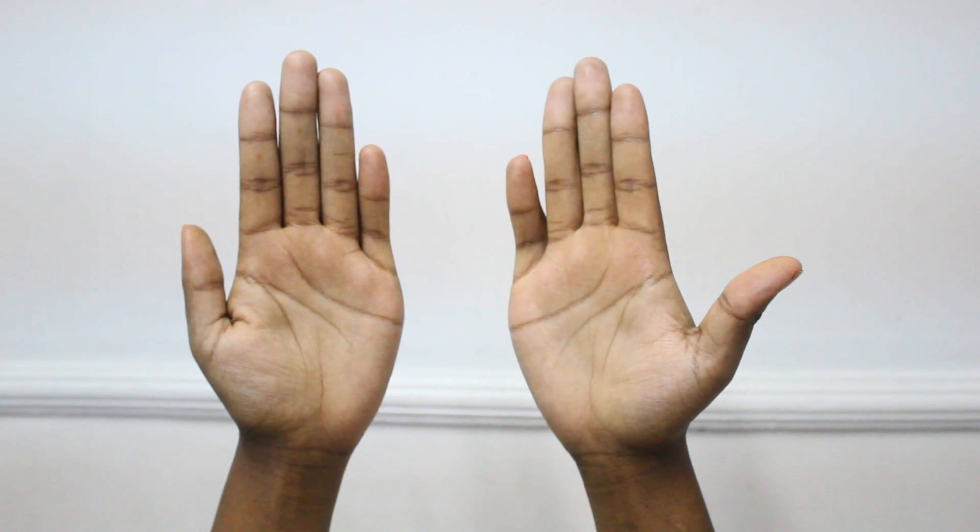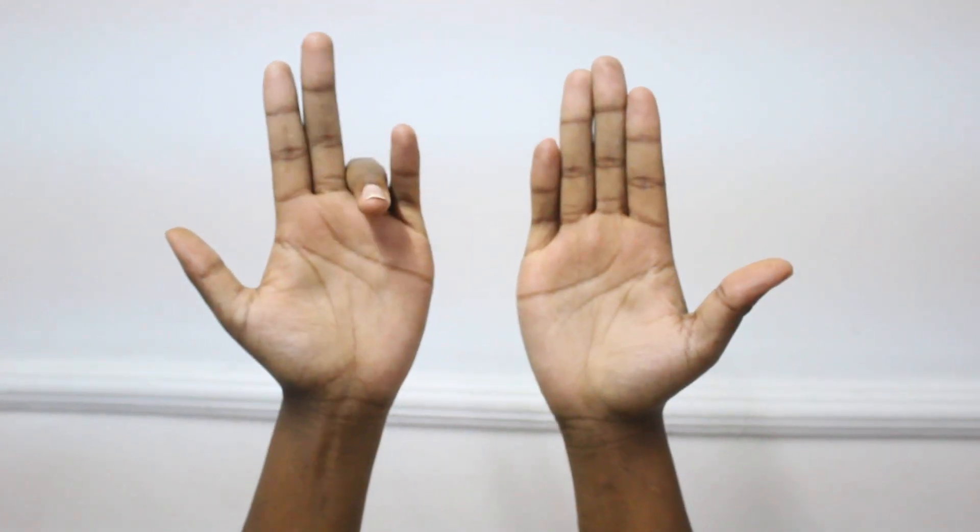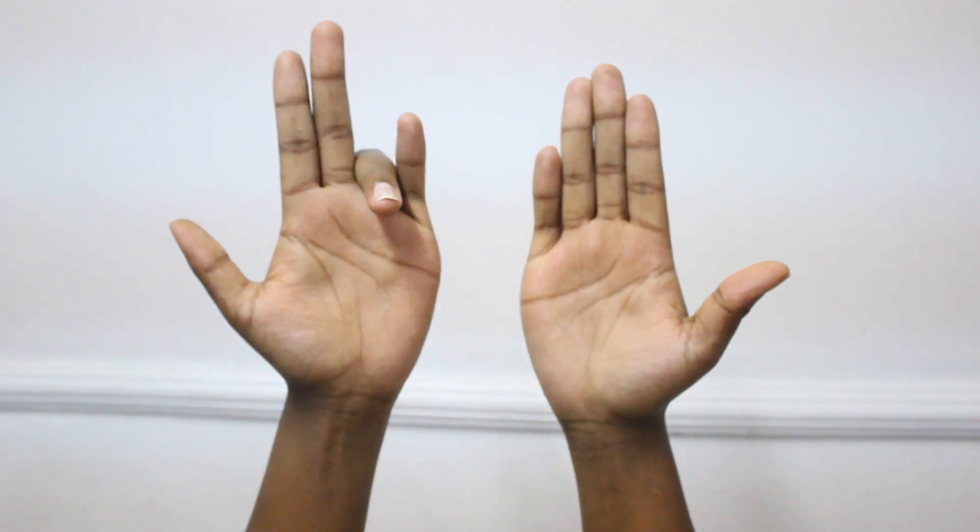For example, let's say the question is 9 times 4 equals what? Count to the 4th finger on your left hand and curl that finger under. As you can see, we have 3 fingers left before that finger and 6 fingers up after, so the answer is 36.